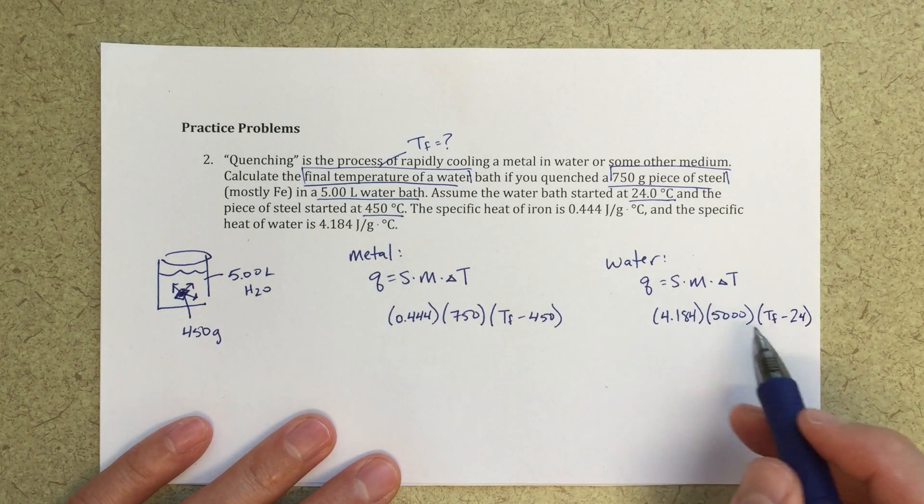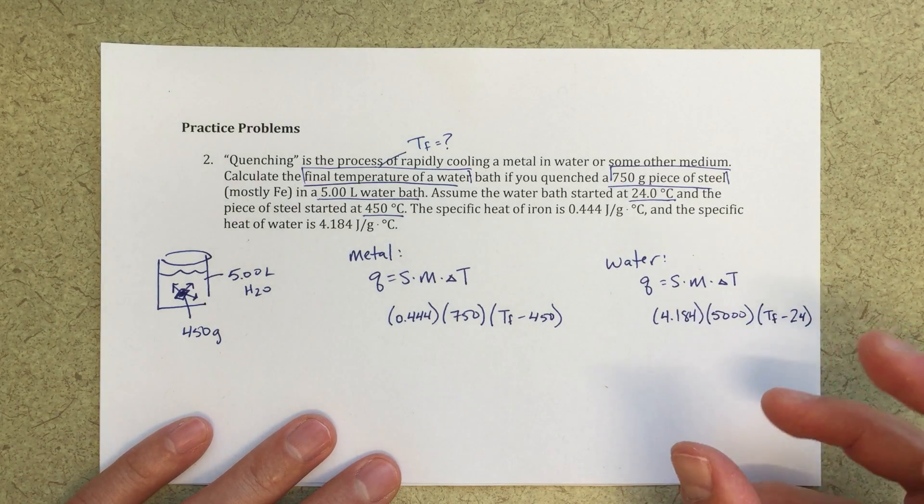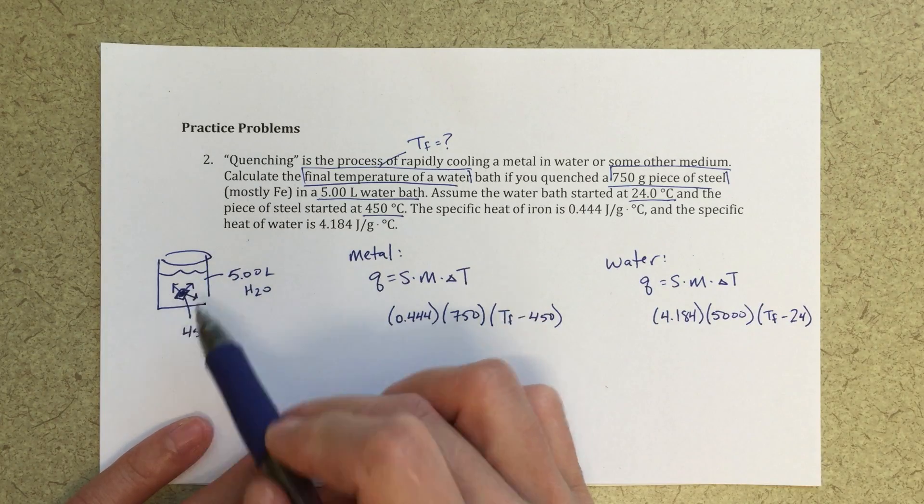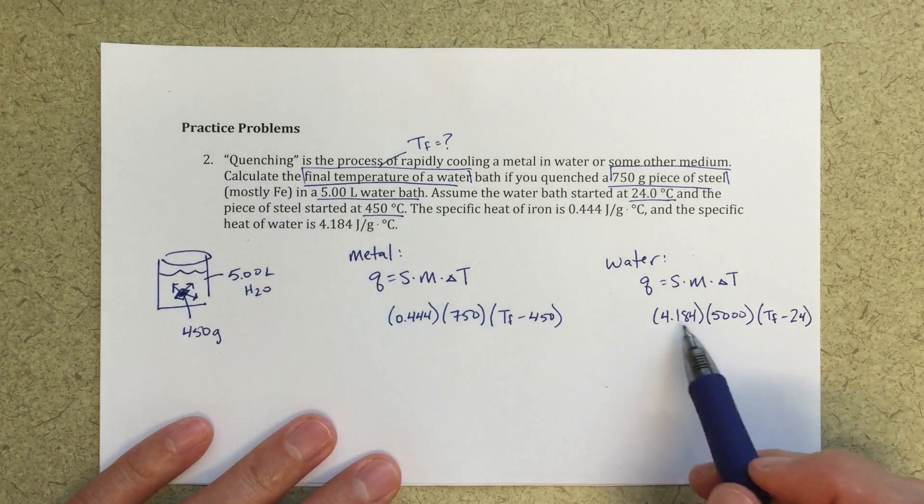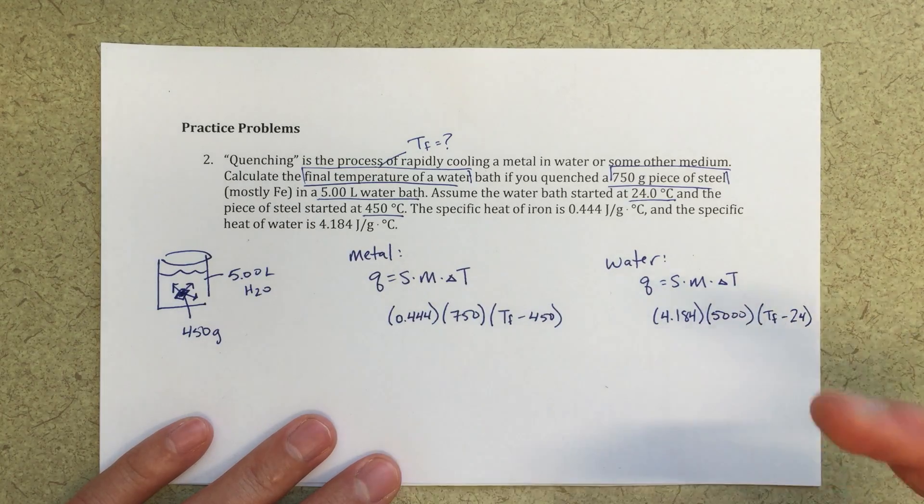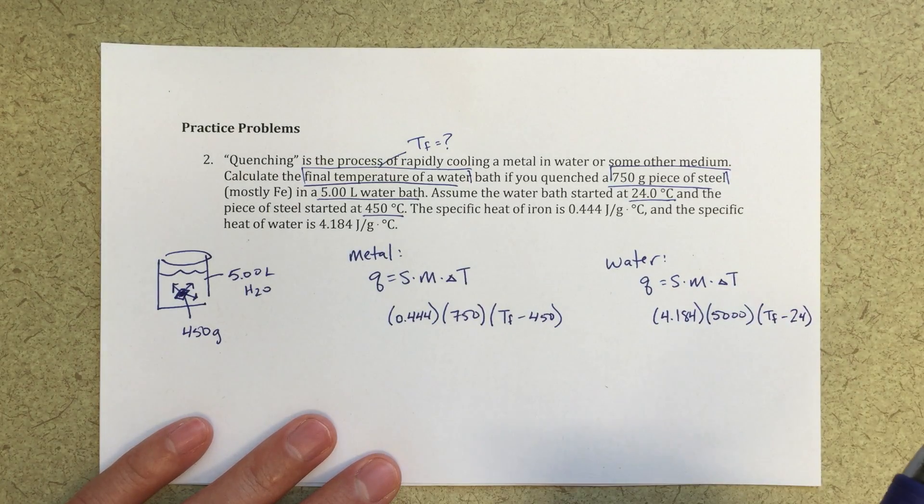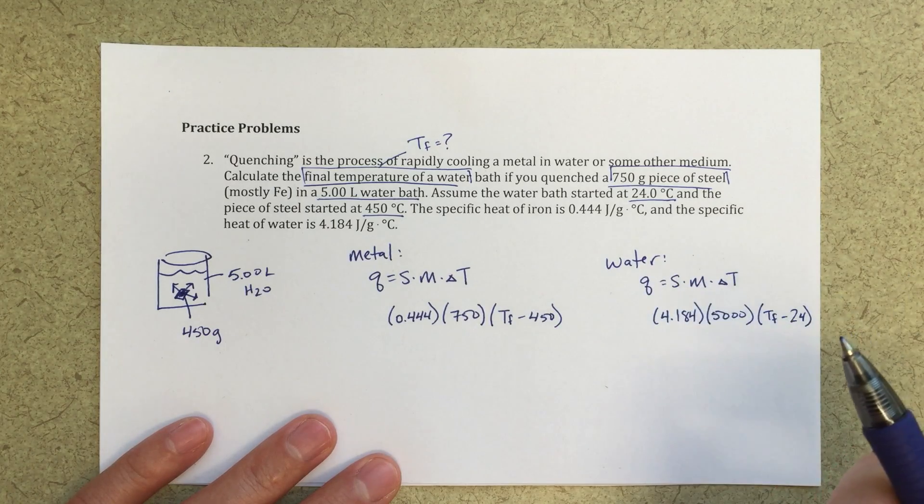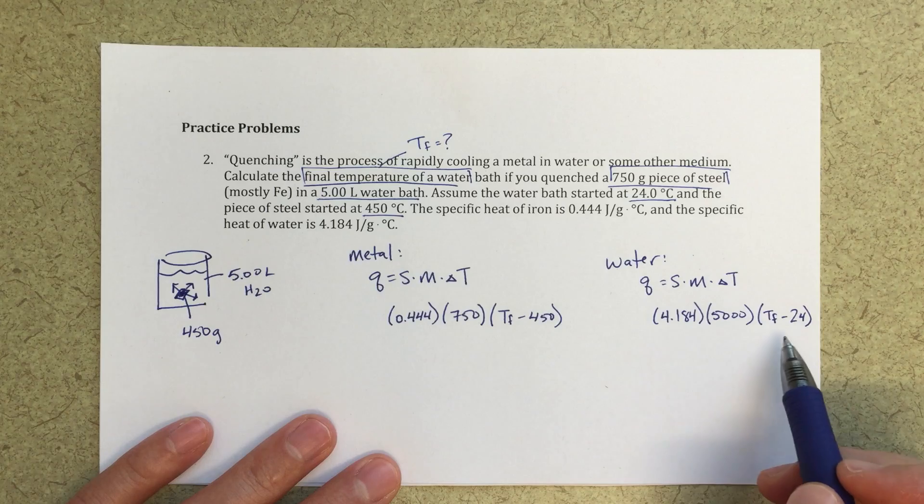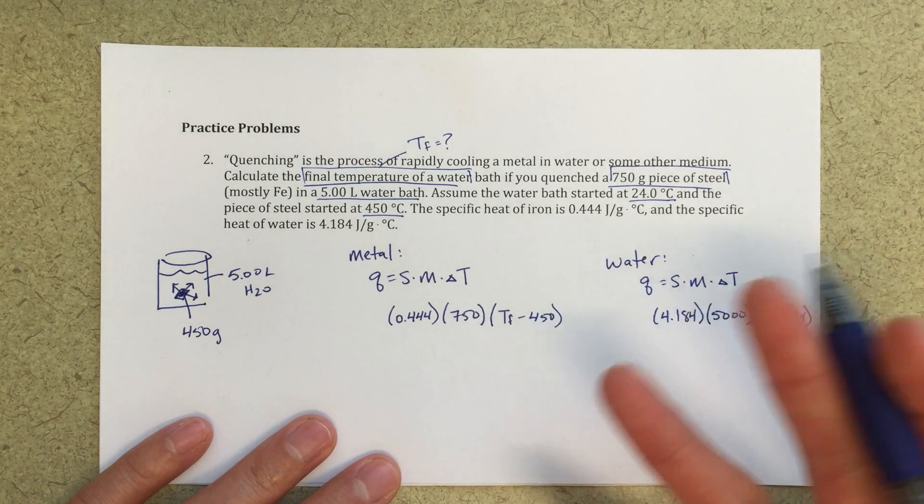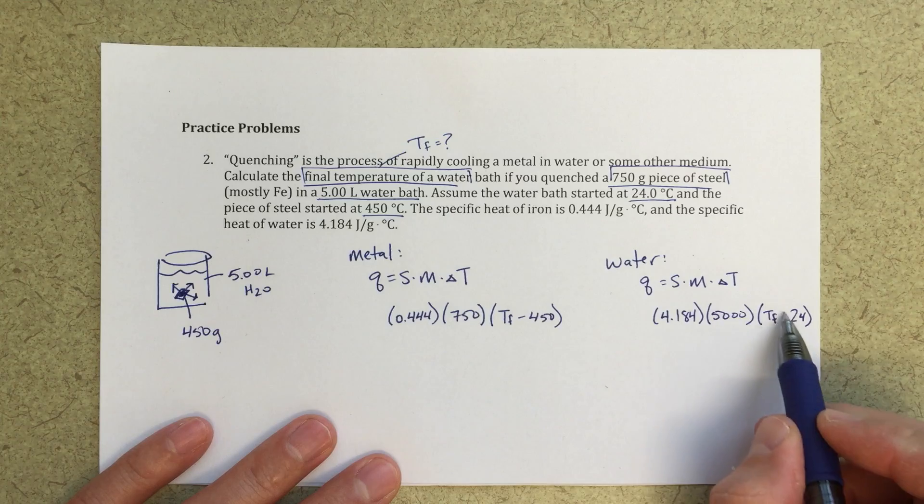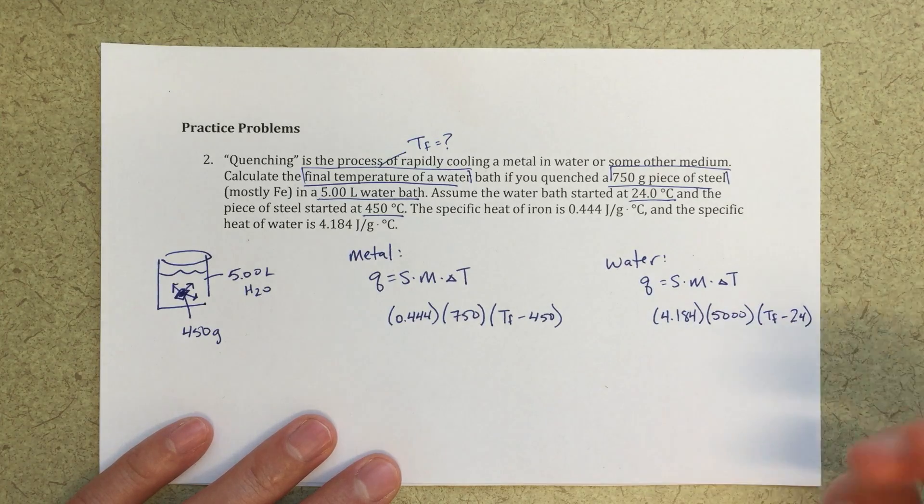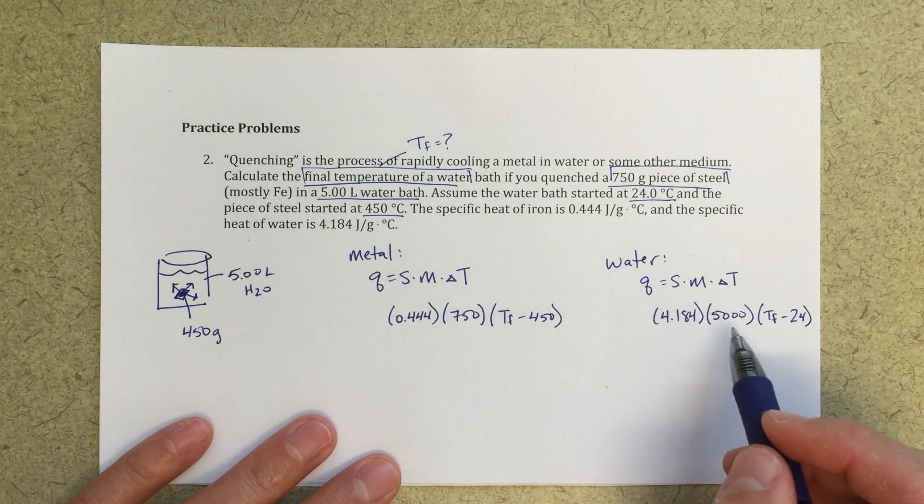So this amount of energy is going to represent the amount of energy that the water is going to absorb, right? The water is absorbing this energy from the hot piece of metal. I would expect this value to be a positive value because it's absorbing the energy. If we think about the signs that we have here, t final should be above 24. The water is going to warm up a little bit. So this will be all positive values. So that will be a positive number, a positive amount of energy.